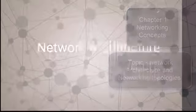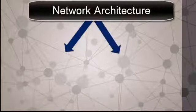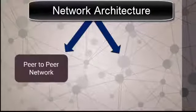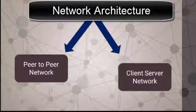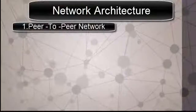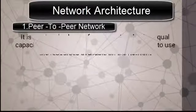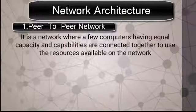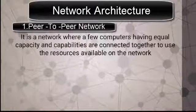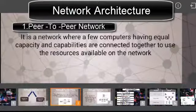We will begin with the topic network architecture. Basically, there are two types of network architecture. The first one is peer-to-peer and the second one is client-server network. Let us discuss them one by one. Peer-to-peer is a network where few computers having equal capacity and capabilities are connected together.